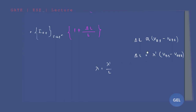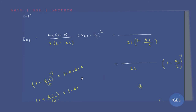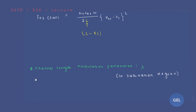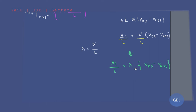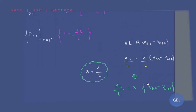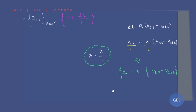Dividing both sides by L: ΔL/L = λ · (VDS − V_effective), where λ = λ'/L is the channel length modulation parameter. Remember this formula — it is important for engineering service and conventional exam questions. This completes the derivation of ΔL/L.